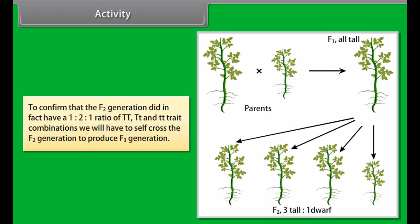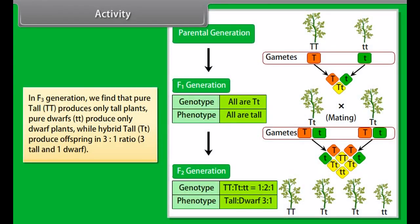Law of segregation: Mendel said that before passing a character into the next generation, the genes are first segregated or separated into gametes, which are then reunited to form a diploid zygote. In his experiment, Mendel also considered two characters — seed color (yellow/green) and seed shape (round/wrinkled). Such a cross which considers two characters at the same time is called a dihybrid cross.